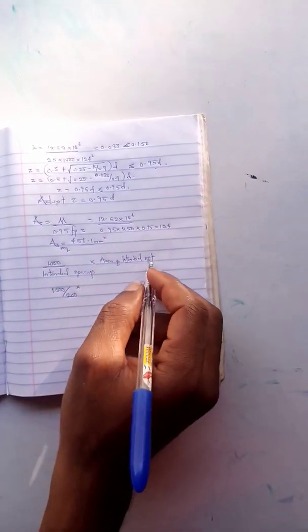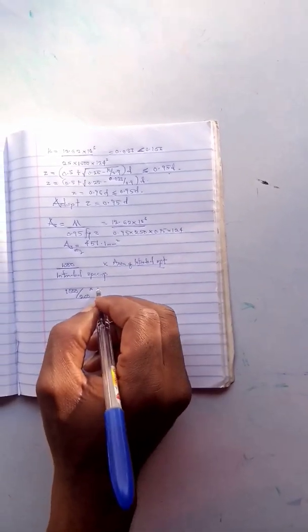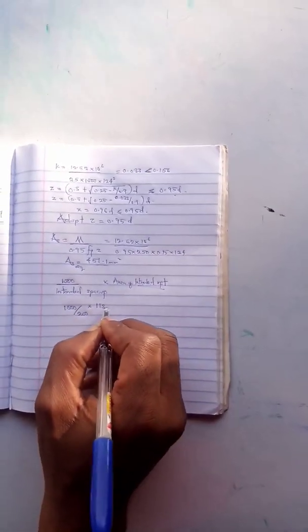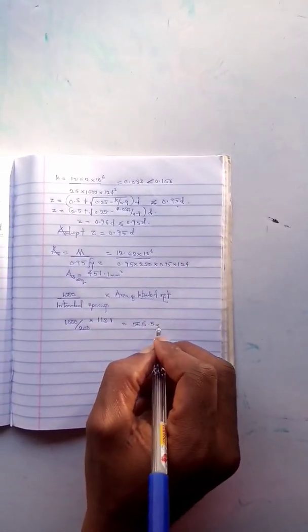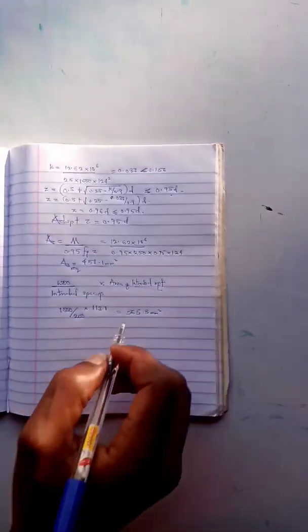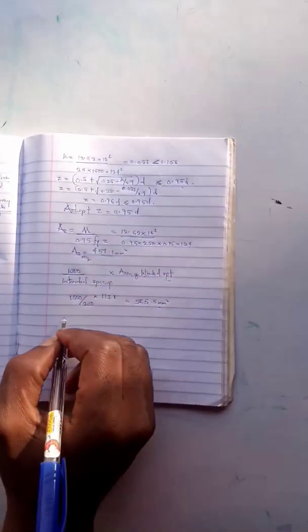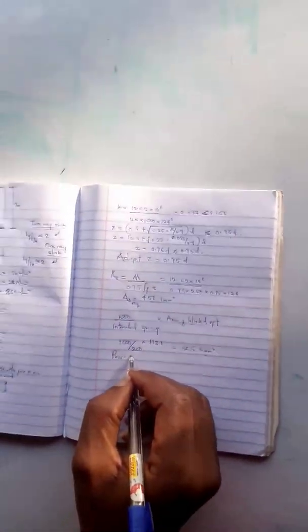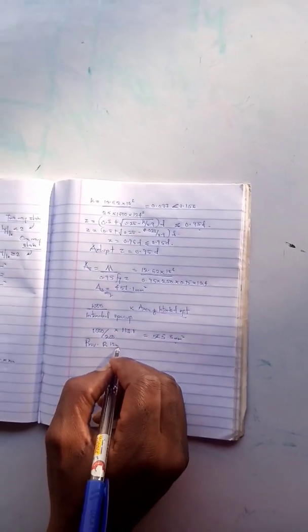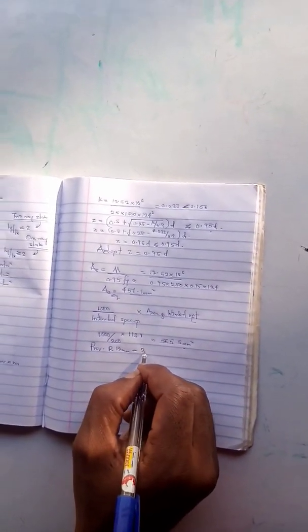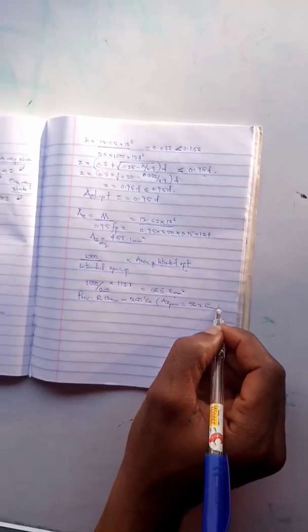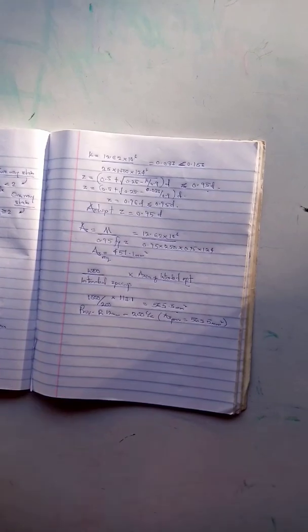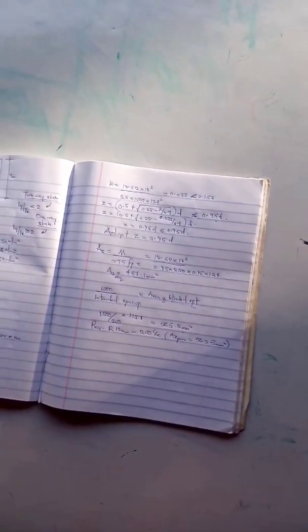I have 1000 divided by 200 spacing, and the area of 12 mm reinforcement is 113.1, so this will give me 565.5 mm square. This is greater than the required area, so I can provide 12 mm by 200 center to center. The area of steel provided is 565.5 mm square. That is that for the main reinforcement.